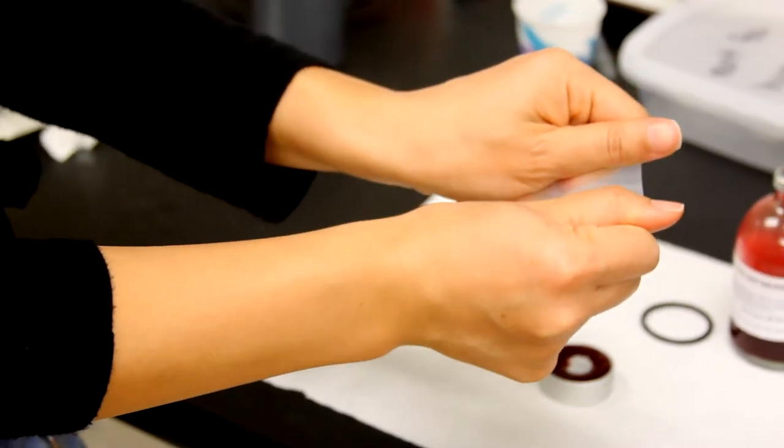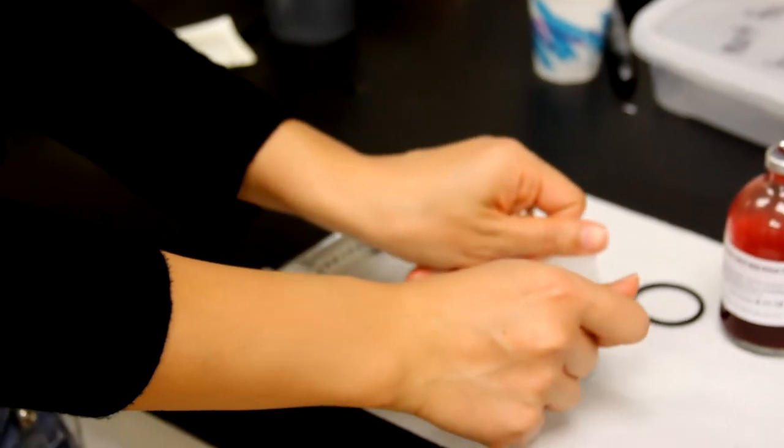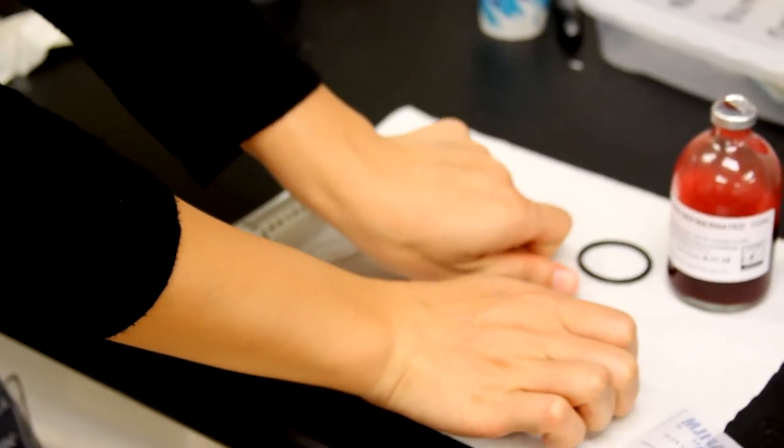Then stretch the parafilm over the reservoir with the human scented side facing out. Make sure not to stretch too thin as it can melt or tear when warmed up.